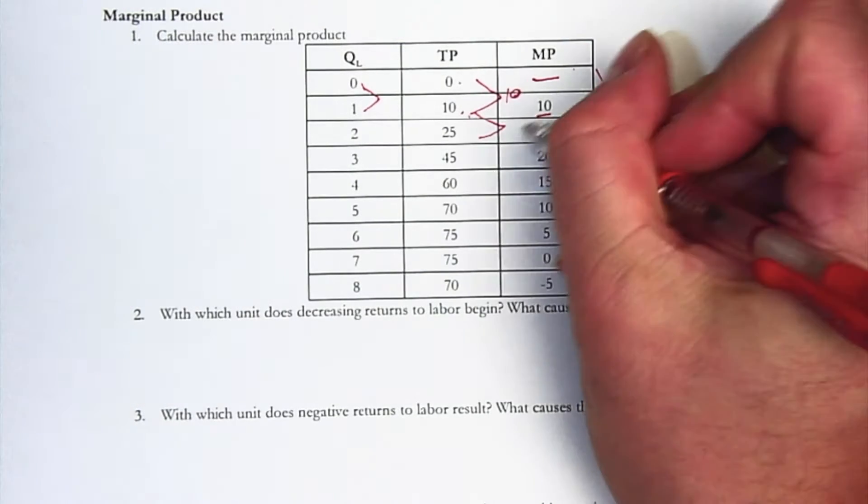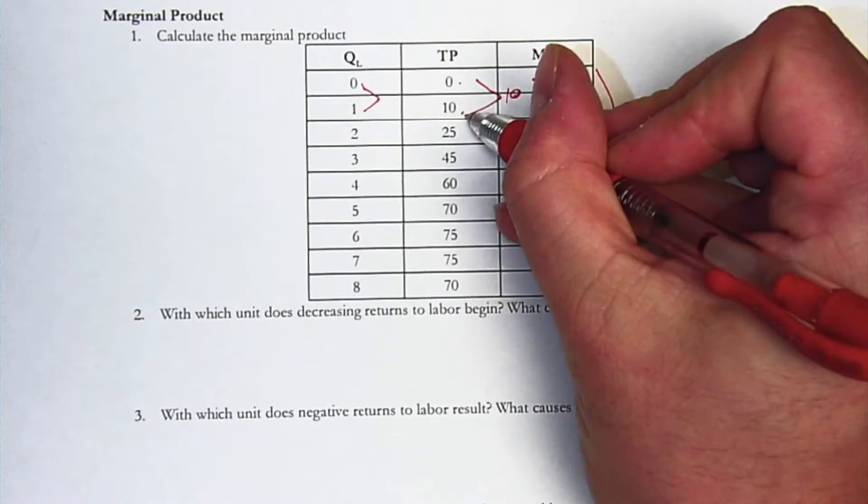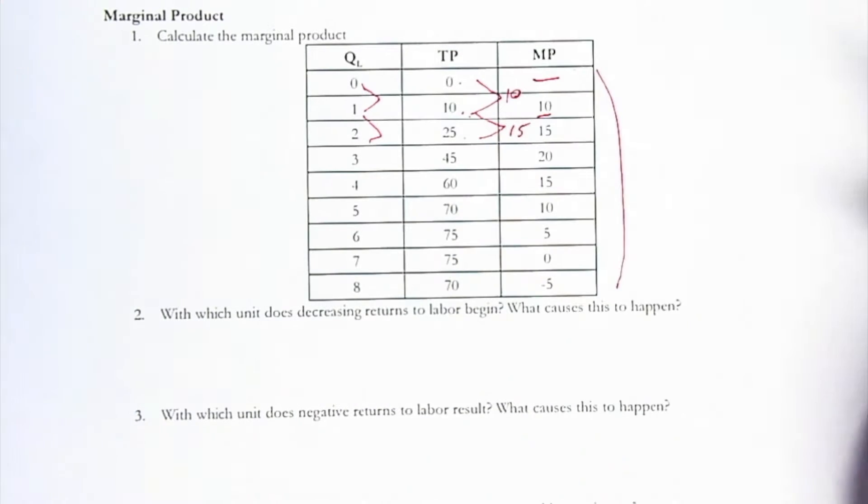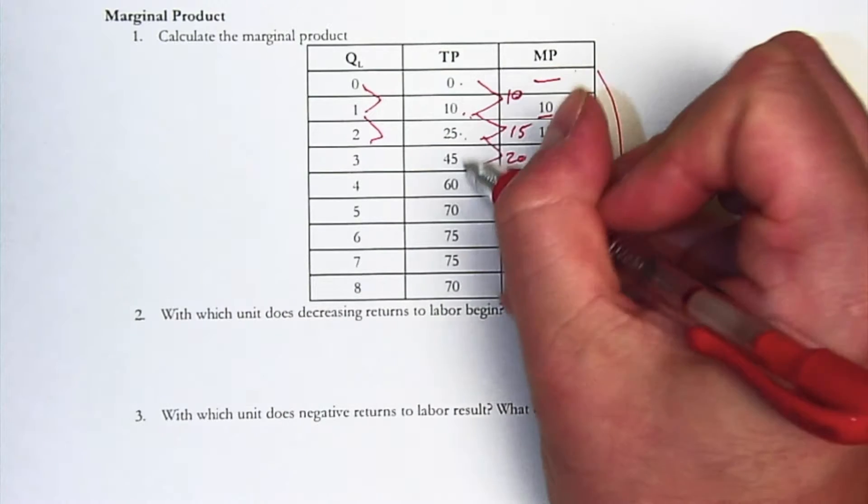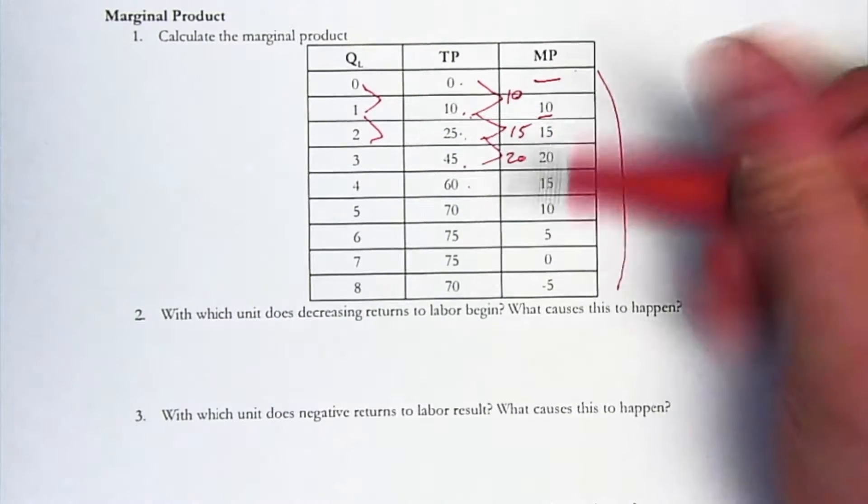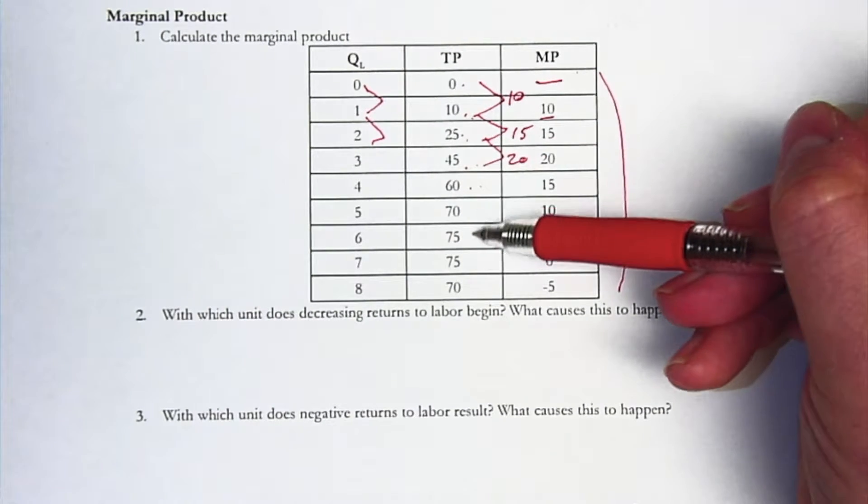For the second worker, it's 15, because the second worker added 15. So that's our second worker's marginal product. And again, 20 is the difference between these two. 15 from these two, 10, 5, 0.